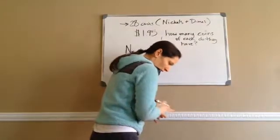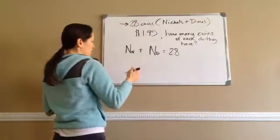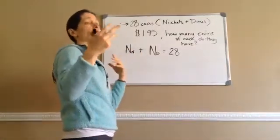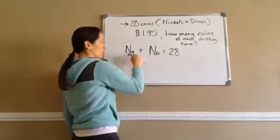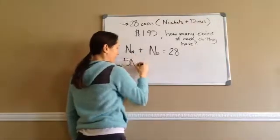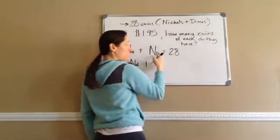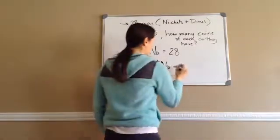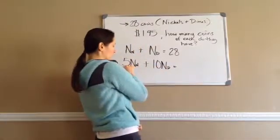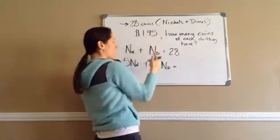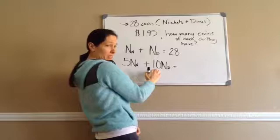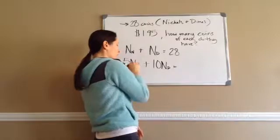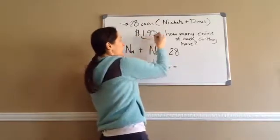That's going to be your very first equation. Now we're going to come up with a second one. The way you come up with a second one is by telling the dollar amount or how much each dime or nickel is worth. So nickels are worth five. We're going to say five times NN plus ten times ND. And since we're doing price — five cents and ten cents — this equals $1.95. Since this is in how many pennies it makes up: a nickel is five pennies and a dime is ten pennies.